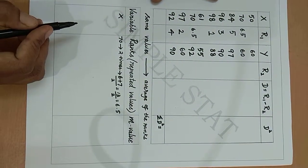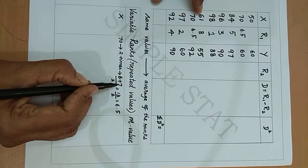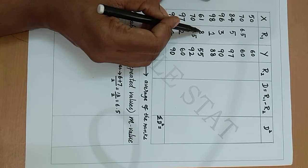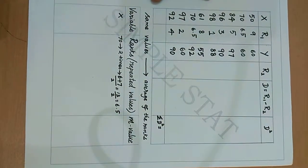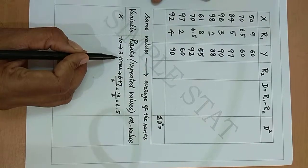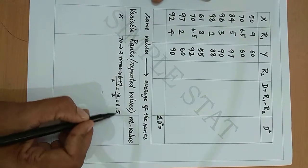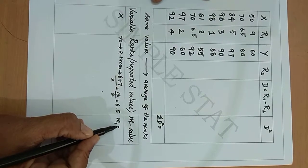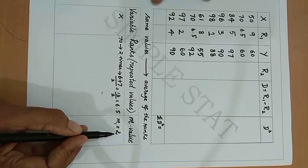The next mark is 61, which takes rank 8 — note that ranks 6 and 7 have already been used. Finally, 50 is ranked 9. The M value: since 70 occurs two times, it is assigned rank 6.5, so this rank occurs two times. We denote this as M1, and its value is 2, that is M1 = 2.